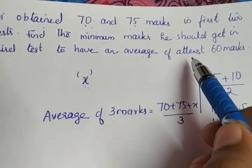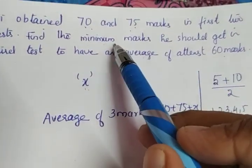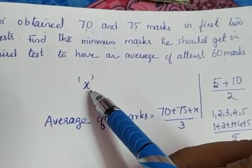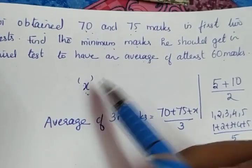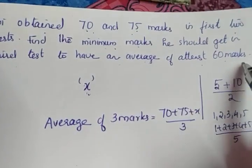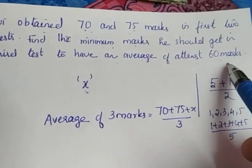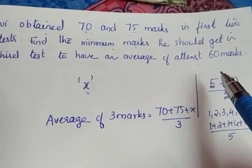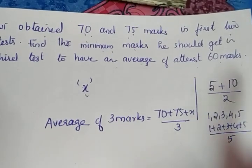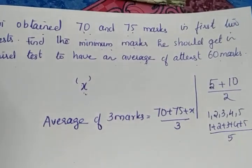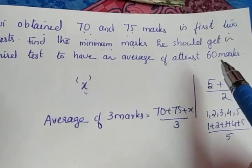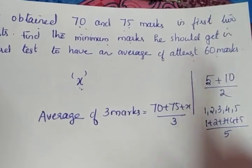What is the condition? We have to find the minimum marks such that the average is at least 60 marks. At least 60 marks means the minimum value is 60 — it can be more than 60. At least 60 means the minimum value is 60.